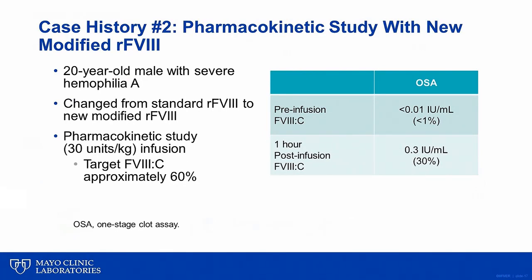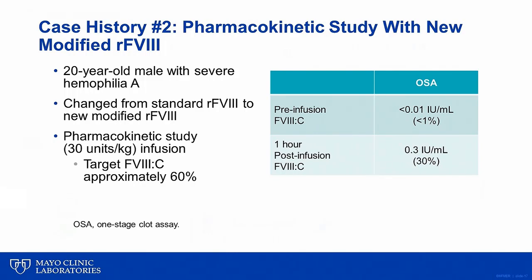In the second illustrative case, a similar pharmacokinetic study was done on a patient with severe hemophilia A who had just switched to a new modified recombinant factor VIII. The patient received approximately 30 units per kilogram of the new modified recombinant factor VIII. The dose was calculated to achieve a post-infusion target of approximately 60%. However, when measured with the one-stage assay, the post-infusion level was only 30%. When the same plasma sample was used to measure factor VIII using the chromogenic factor VIII assay, results were markedly different, and indeed the dosage was accurately calculated to achieve the intended target. So for this particular modified recombinant factor VIII concentrate, the chromogenic assay was more accurate than the one-stage assay.